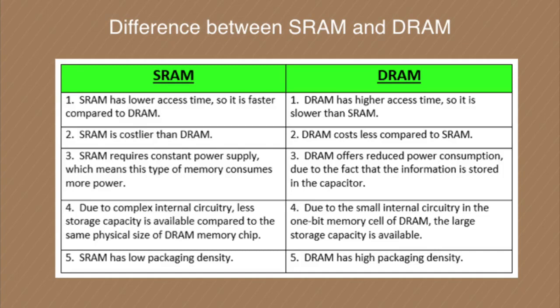Due to the complex internal circuitry of SRAM, less storage capacity is available compared to the same physical size of a DRAM memory chip. Due to the small internal circuitry of DRAM, large storage capacity is available. SRAM has low packaging density, but DRAM has high packaging density.